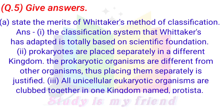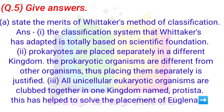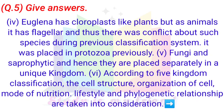Question: State the merits of Vitakar's method of classification. Answer: 1. The classification system that Vitakar adapted is totally based on scientific foundation. 2. Prokaryotes are placed separately in a different kingdom, as prokaryotic organisms are different from other organisms, and placing them separately is justified. 3. All unicellular eukaryotic organisms are grouped together in one kingdom named Protista. 4. This helped solve the placement of Euglena, which has chloroplasts like plants but also has flagella like animals, causing conflict in previous classification systems.